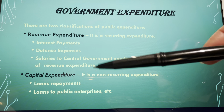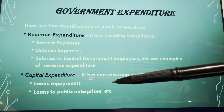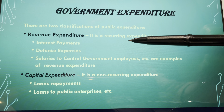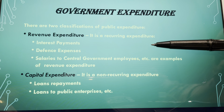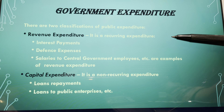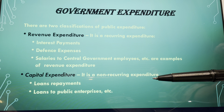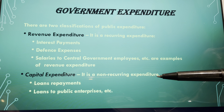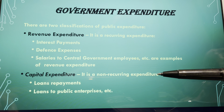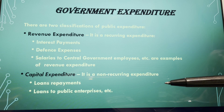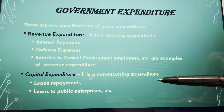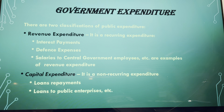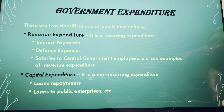In capital expenditure, examples include loan repayments and loans to public enterprises. Revenue expenditure covers day-to-day and administrative costs, while non-recurring capital expenditure covers unexpected costs taken only once, such as restructuring, profit/loss settlements, or legal issues.